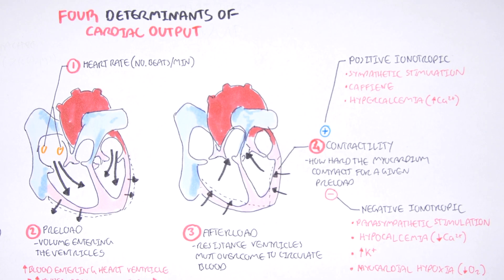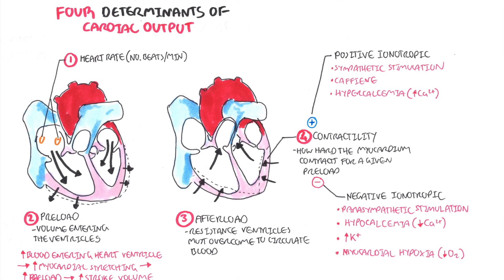That was a brief look at cardiac output and what influences it. There are four determinants of cardiac output: heart rate, preload, afterload, and contractility.